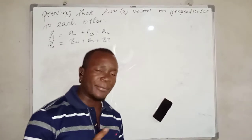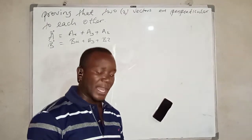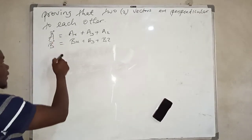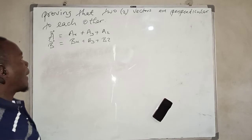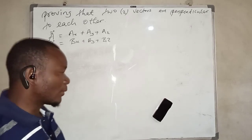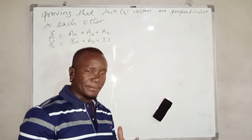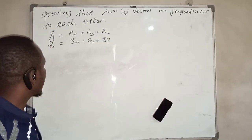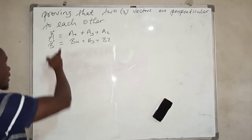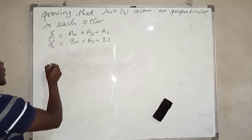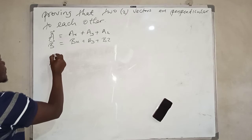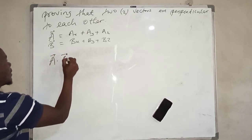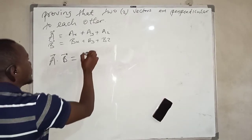We know that two vectors are perpendicular if the angle between them is 90 degrees. To proceed, we have vector a and vector b, and we are going to use the concept of the dot product. We could use either dot product or cross product, but in this video we are going to use the dot product.